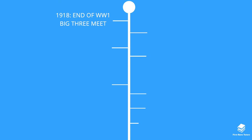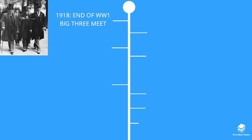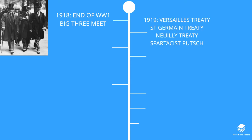Our timeline begins in 1918 with the end of the First World War, where the Big Three met: Lloyd George of the UK, President Wilson of the US, and Georges Clemenceau of France. This meeting resulted in the infamous Versailles Treaty, which was signed without Germany being present. Germany was obligated to pay 132 billion gold marks, reduce its army to just 100,000 men, and Germany was broken up, forming new states including Poland, Latvia, Estonia and Lithuania.